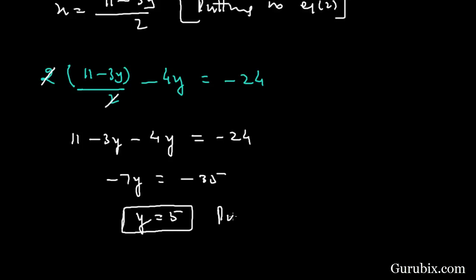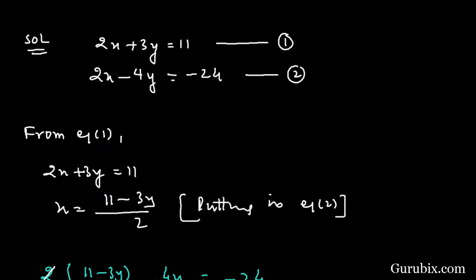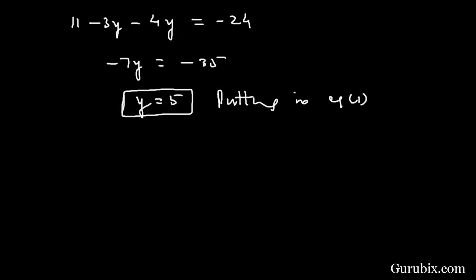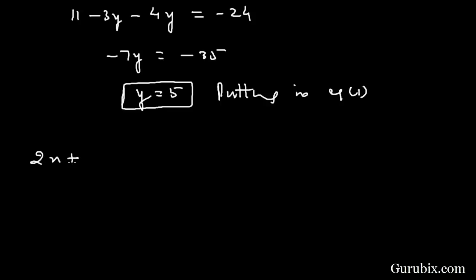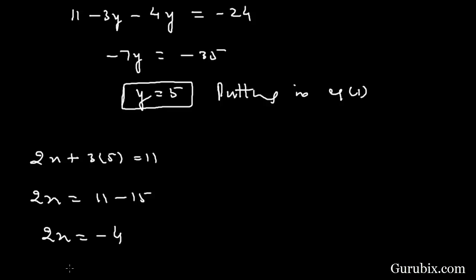Now we substitute y equals to 5 back into equation number 1 to find x. Equation number 1 is 2x plus 3y equals to 11, so 2x equals to 11 minus 15, which means 2x equals to minus 4, therefore x equals to minus 2.